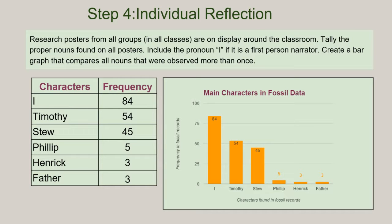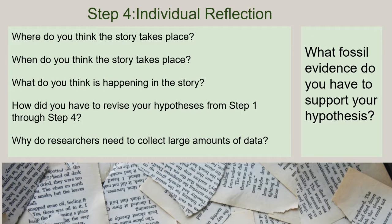Finally, back on an individual footing, we've got all the posters from every class representing about 165 students' worth of data. We take a look at the nouns, and in particular the proper nouns, to try to find the names of characters. In the case of our nouns here, we also had to include the pronoun I because it was in first person — and it turns out I, probably a character, was the most frequent. We create a chart and a data table, and we can see that I, Timmy, and Stu seem to be pretty important characters in this fossil record. Then a little bit of reflection: after going from 1 to 4 to 165 fossils, where do we think the story takes place and what evidence supports that? What do you think's happening? How did your hypothesis have to get revised from step one through step four? And the key question: why do researchers need to have a large amount of data?